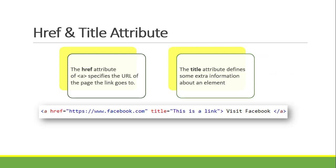Next are the href and title attributes. The href attribute of the anchor tag specifies the URL of the page the link goes to. The title attribute defines some extra information about an element. We use href and title attributes on our anchor (link) tag. Inside the link tag, we place href equal to the URL, and then title equal to some additional information about the element.